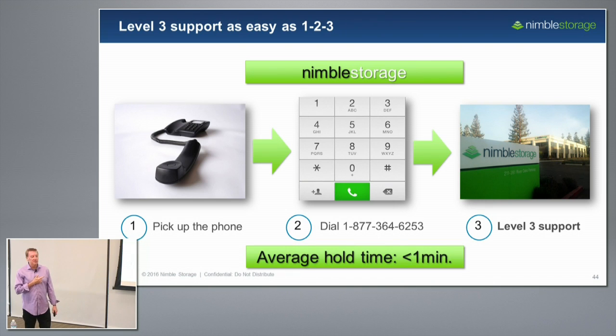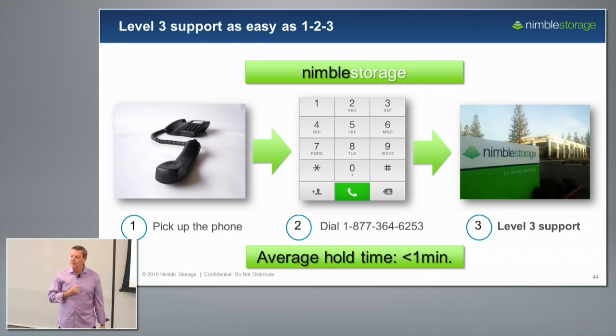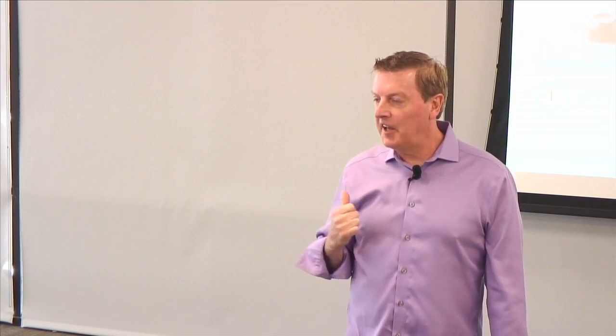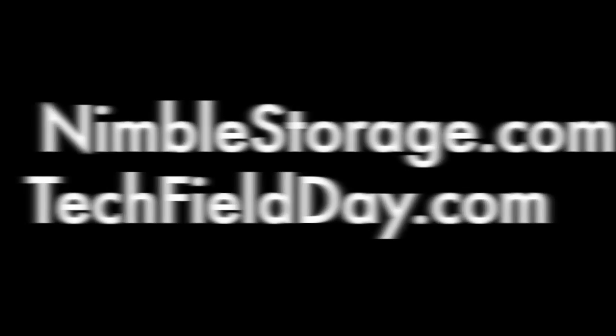That's Nimble's support model: you call us, you get level three, and the average hold time is less than a minute. A big part of that is finding nine out of ten problems before they even come in — having high availability means customers don't run into problems. We also arm our support engineers with tools that look at all this data and help them solve problems fast. My big audacious goal for the support team is no case should take more than 20 minutes — right now the average is around 45 minutes end-to-end. And the final factor is we get to hire really talented people, because we're looking for level three from the start.